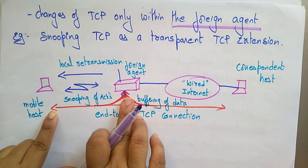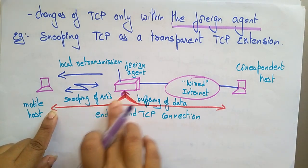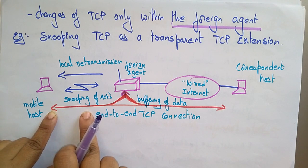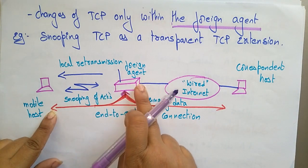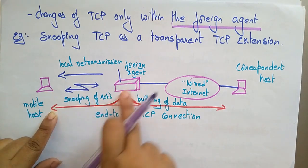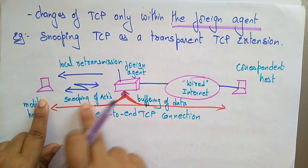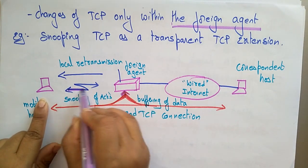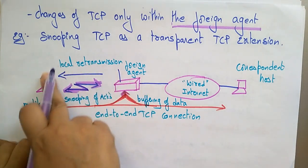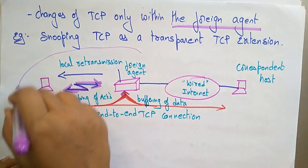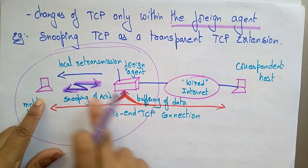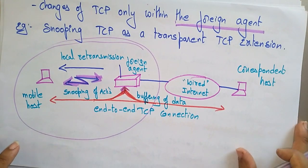Buffering of data is stored in the foreign agent. The snooping of acknowledgements is transparent — whenever a packet is lost, it is retransmitted, and the foreign agent retransmits the packets. The snooping of acknowledgements is established between the mobile host and the foreign agent in both directions. Whatever operations run between the mobile host and the foreign agent is called local retransmission.